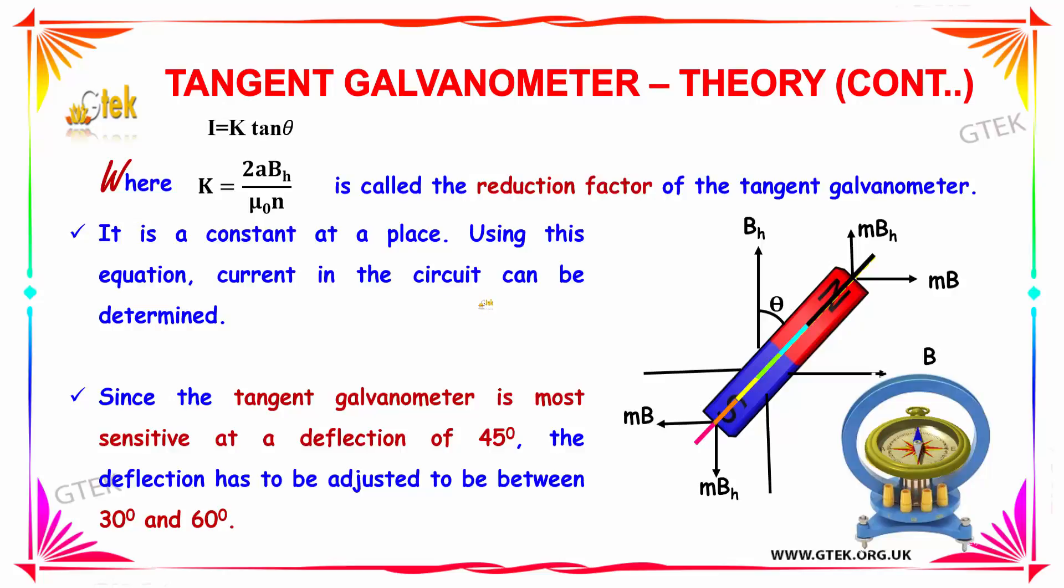Since the tangent galvanometer is most sensitive at a deflection of 45 degrees, the deflection should be adjusted between 30 and 60 degrees.